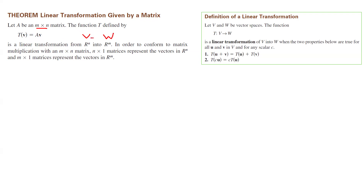This linear transformation maps V, which is N-space, to W, which is M-space. Indeed it is a linear transformation. We went over one example and showed that if you have a random matrix — a 3 by 2 matrix from the previous slide — it indeed is a linear transformation.